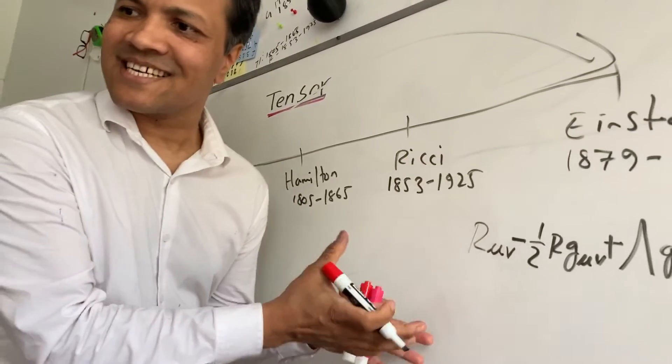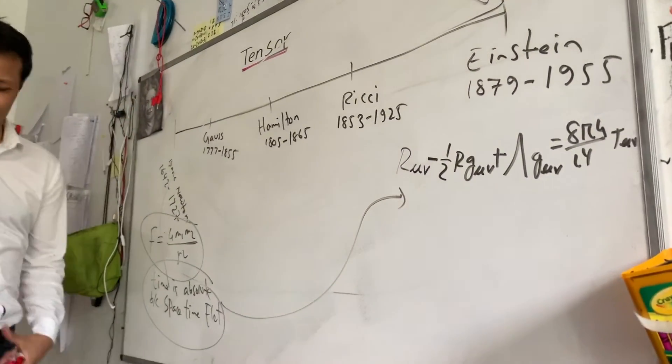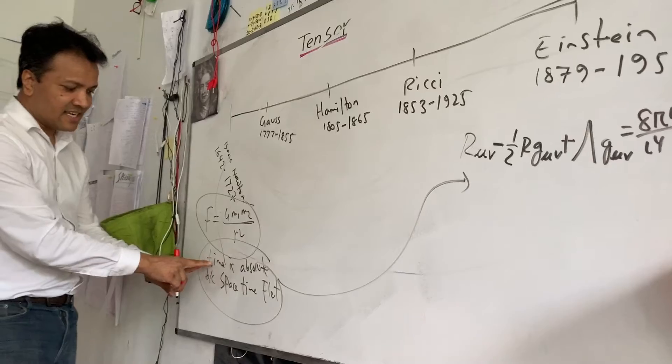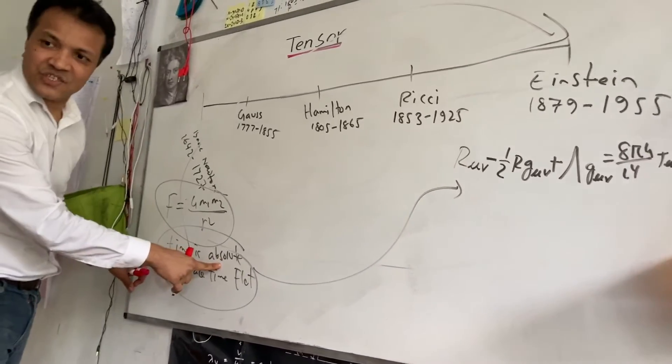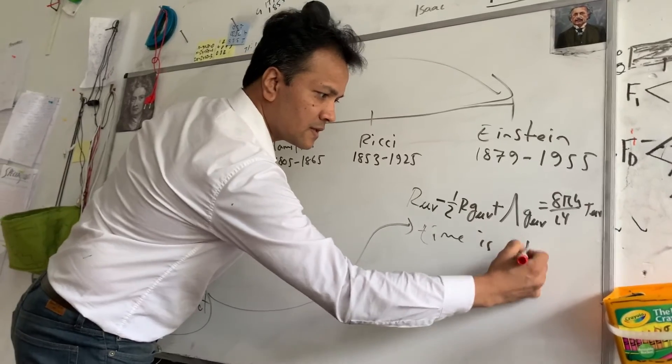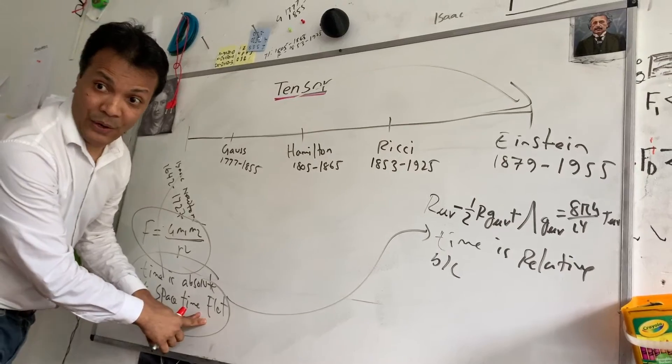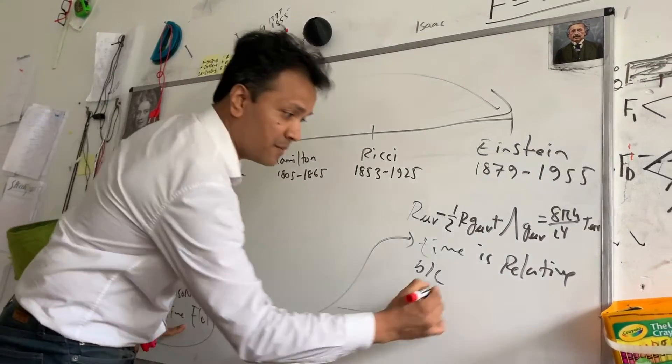What Einstein tells us is that, almost same thing? No, not almost same thing. Exactly opposite. Time is relative because the space time flat? No, because of the curvature of the space time.